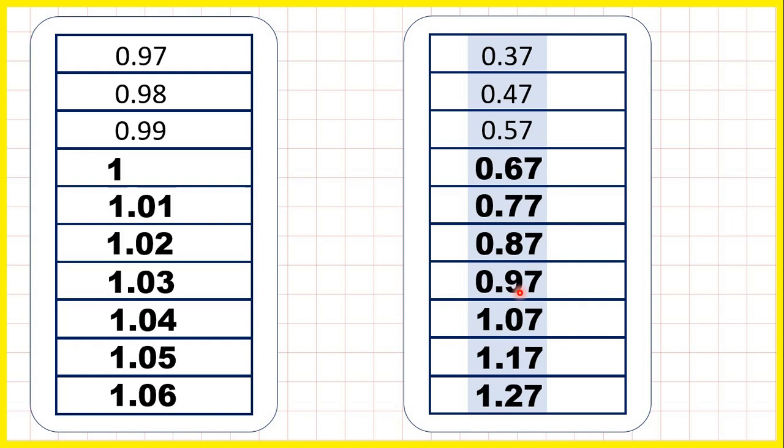And notice 0.97. If we add a tenth, we get 1.07. And it's important to show the 0, because we need to show that the 7 hundredths is staying the same, but if we add 1 tenth to 9 tenths, that gives us one whole.